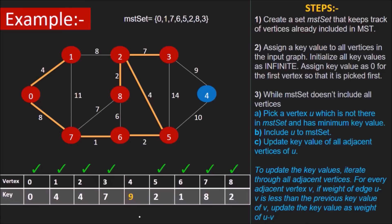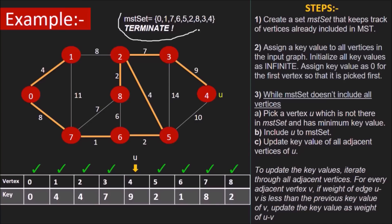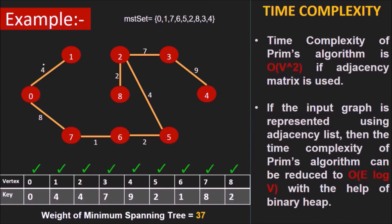Note that our condition says that the procedure will continue till all the vertices are not part of the MST set. Since all the vertices are now added to the MST set, we have reached the terminating condition. Thus, we have successfully obtained the minimum spanning tree of the given graph. We can also calculate the weight of the minimum spanning tree by adding the weight of individual edges in this tree. We see that they add up to 37.